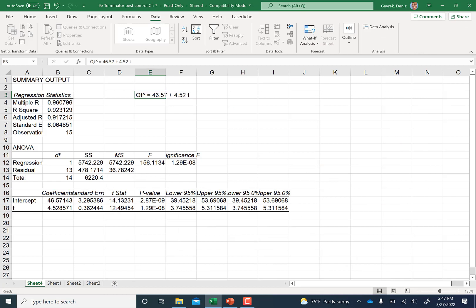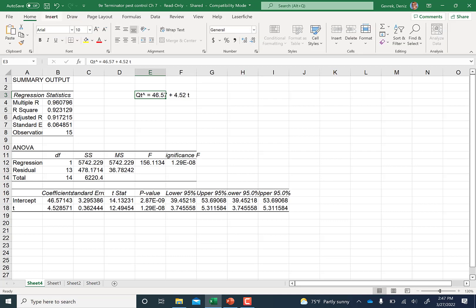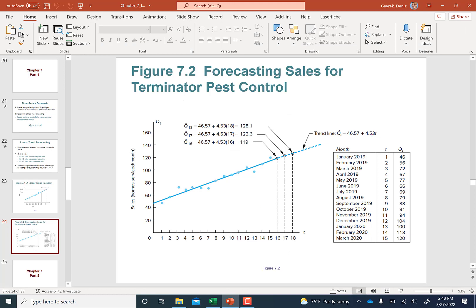Here you have t-stats that are quite large and p-values are super low. These are both statistically significant, so there is a time trend. It says each period, each month, your sales go up by 4.5 more homes serviced. With this trend line, whenever you see t, you plug in the period number.